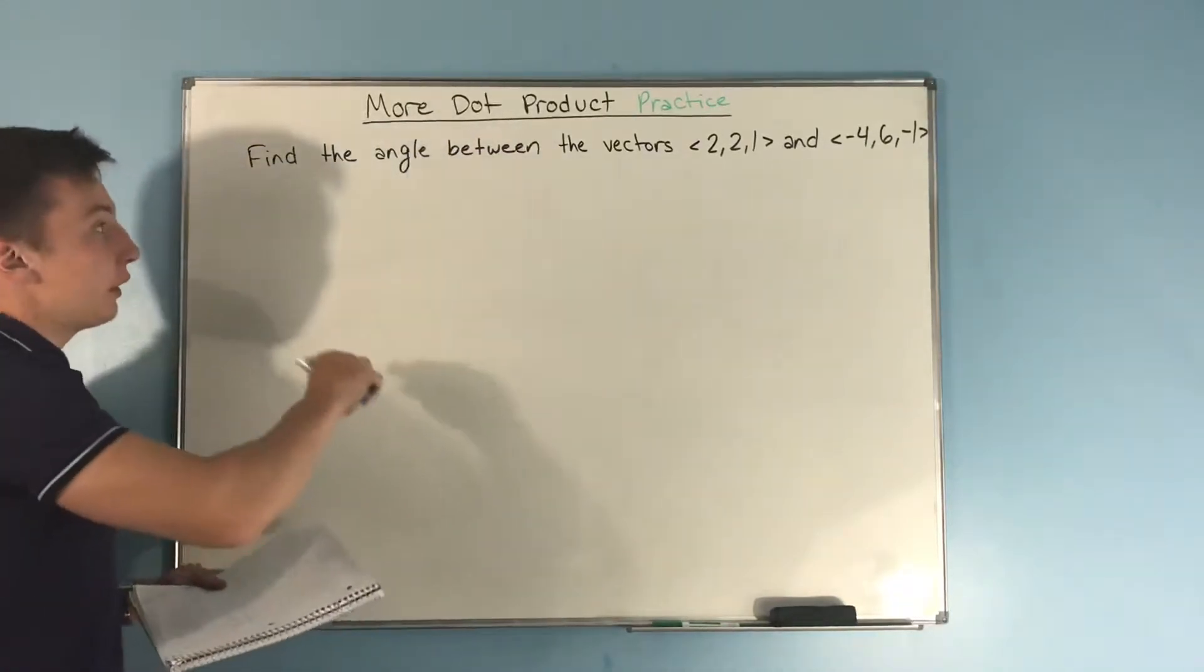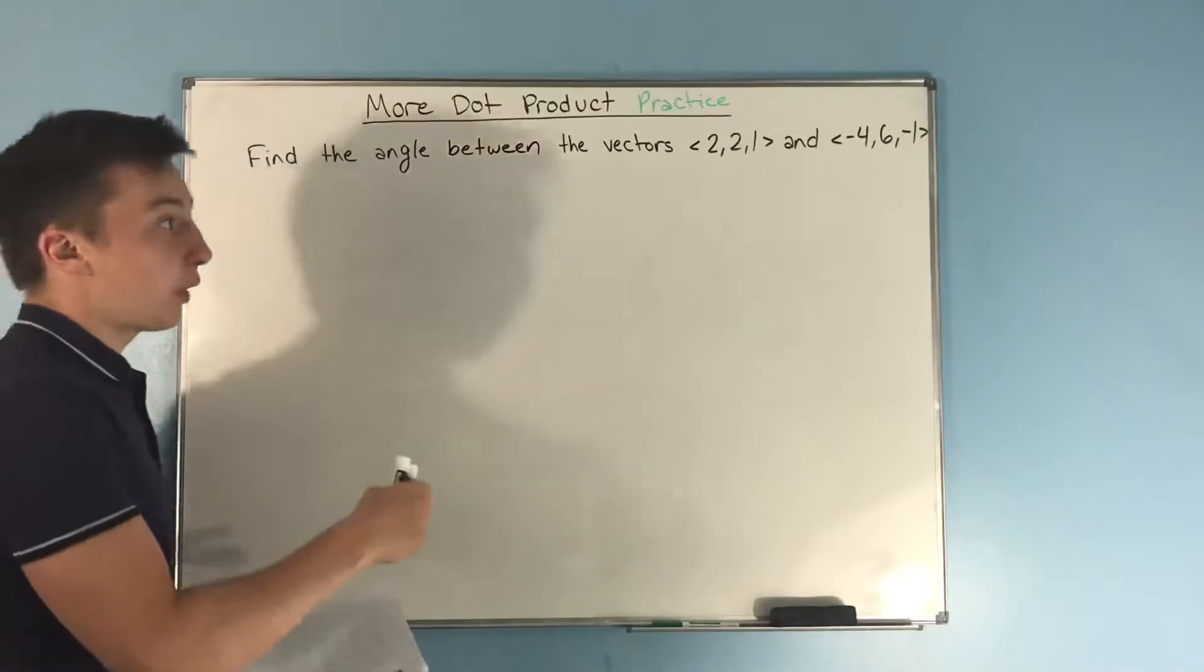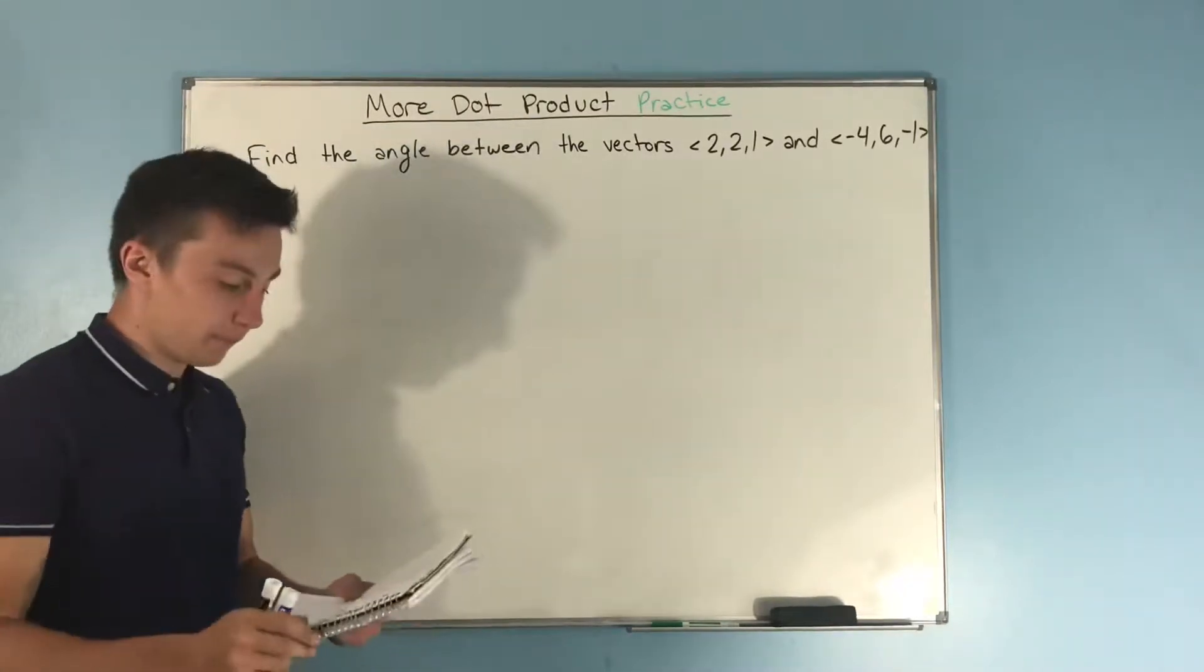So the first thing we want to do is to find the angle between the vectors 2, 2, 1, and negative 4, 6, negative 1.